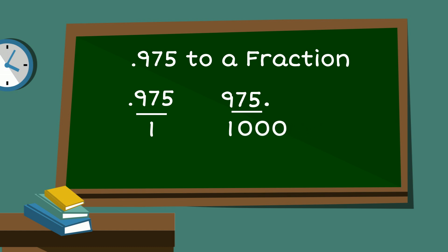So that now gives us 975 over 1,000. They're both divisible by 25. So 25 goes into 975 39 times, and 25 goes into 1,000 40 times. So that gives us 39 over 40.